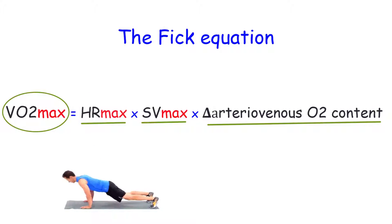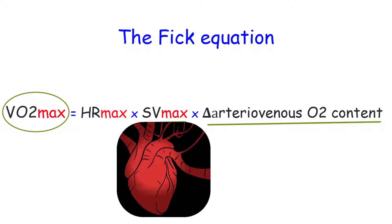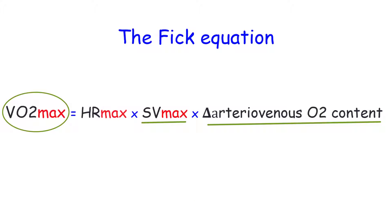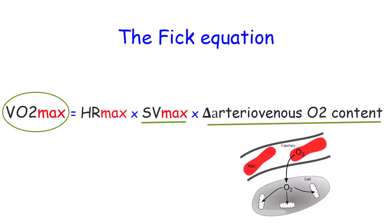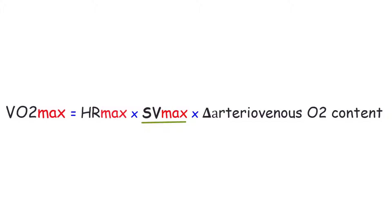Exercise training is able to increase VO2 max two ways. The first is by increasing stroke volume, which increases the amount of blood circulated per minute. The second way is by increasing the arteriovenous oxygen difference. This difference is increased by increasing the amount of oxygen taken out of the blood and taken up by the tissues. Thus exercise training both increases the amount of oxygen available to the cells and increases the uptake of oxygen by the cells.